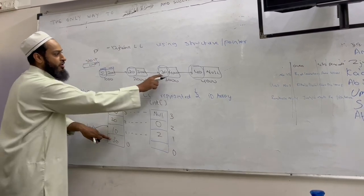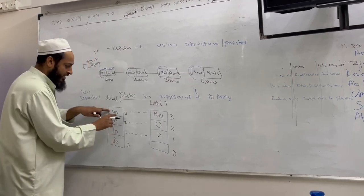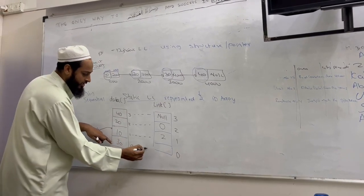And 30 is pointing to where? 4000. Who is there at 4000? 40. 40 at what index? 3. So this will point at 3.